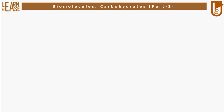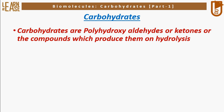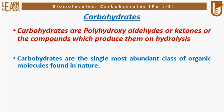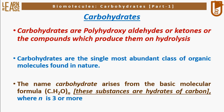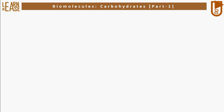Let me start this video by explaining carbohydrates. Carbohydrates are polyhydroxy aldehydes or ketones, or the compounds which produce them on hydrolysis. Carbohydrates are the single most abundant class of organic molecules found in nature. The name carbohydrate arises from the basic molecular formula C(H2O)n, where N is 3 or more — these substances are hydrates of carbon.